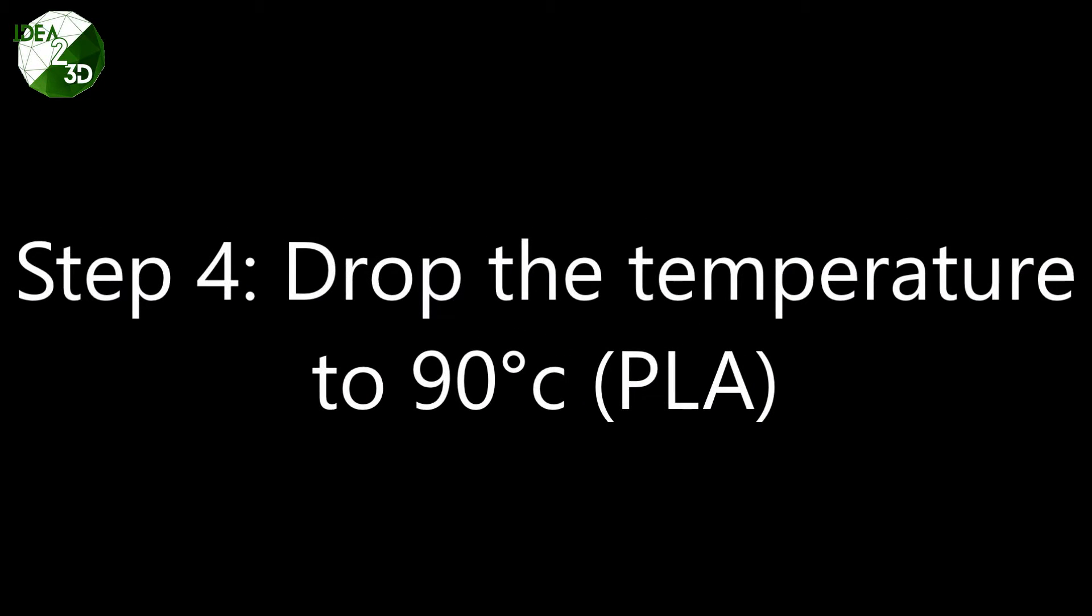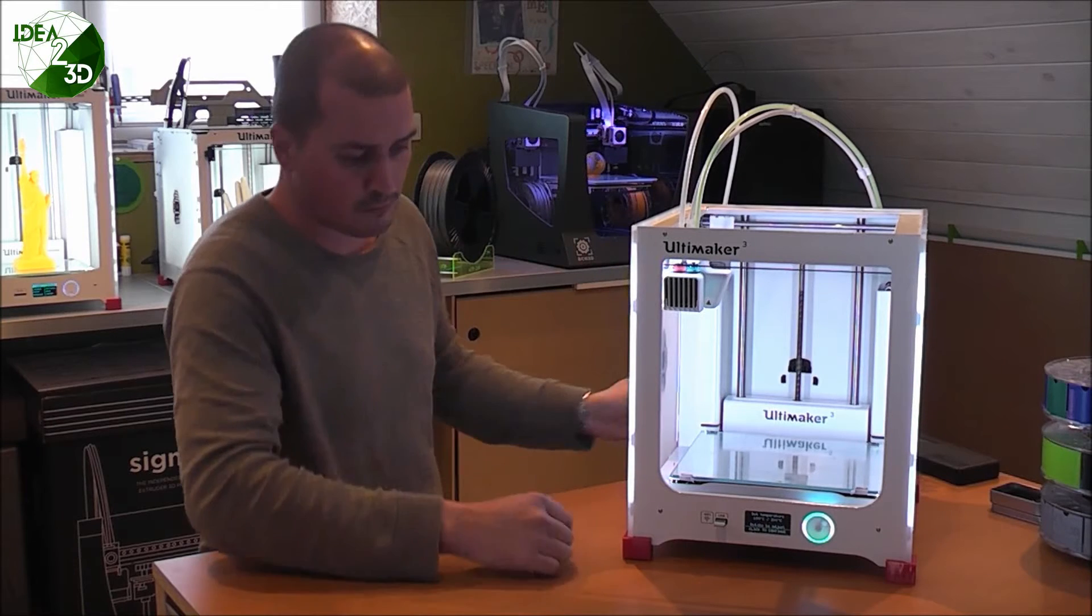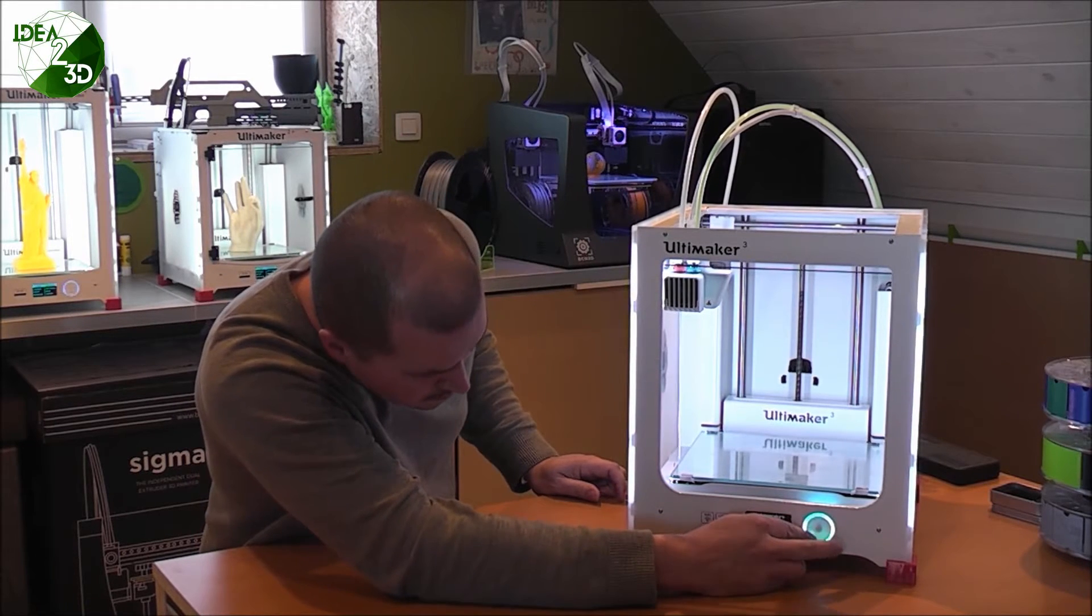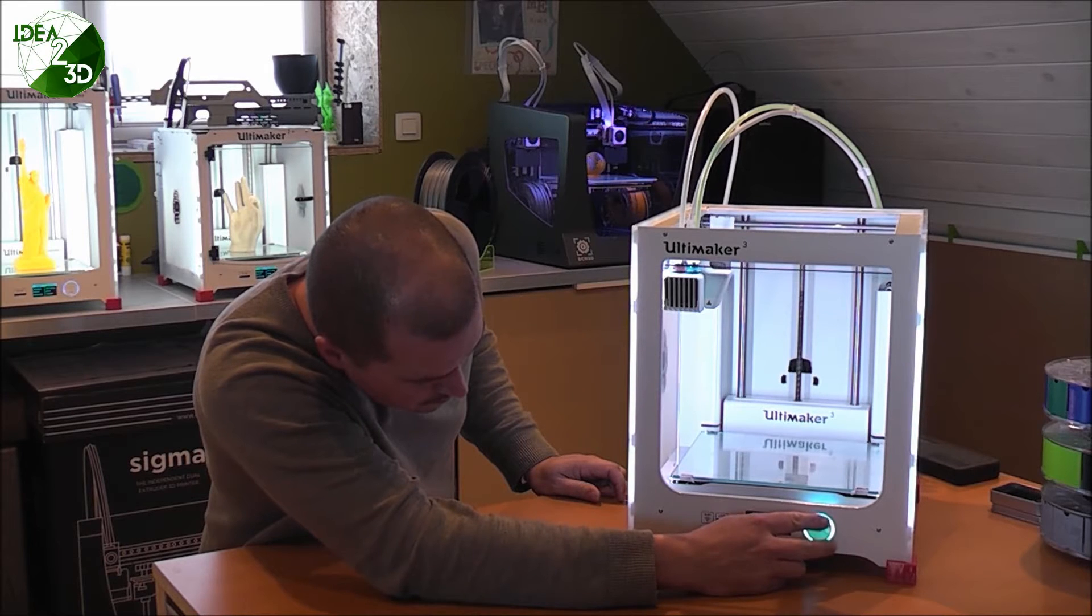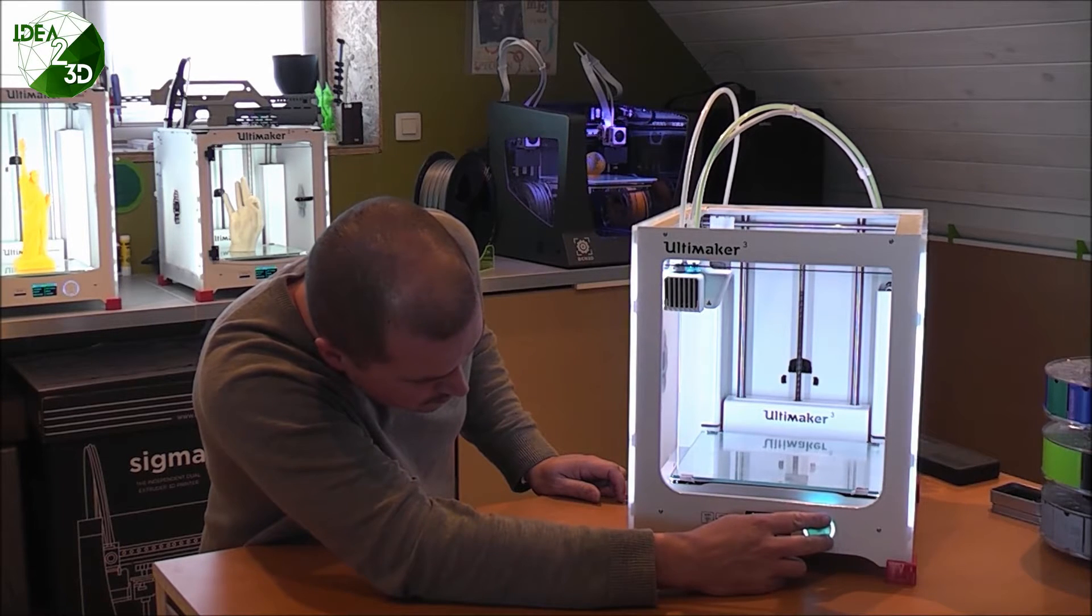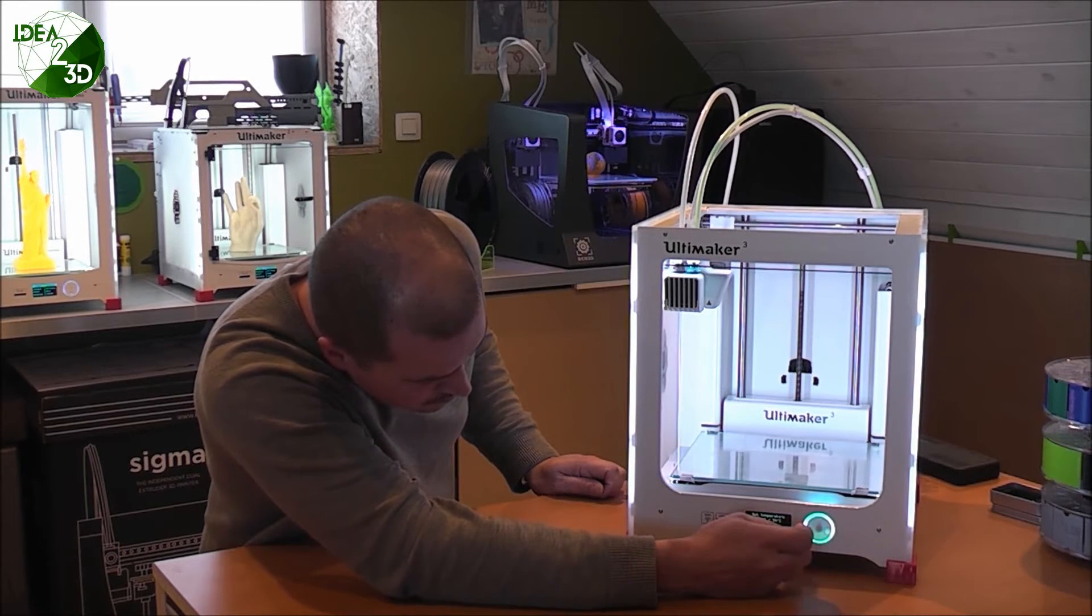Step 4: drop the temperature to 90 degrees for PLA. For ABS this might be 110 degrees or something like that, depends.